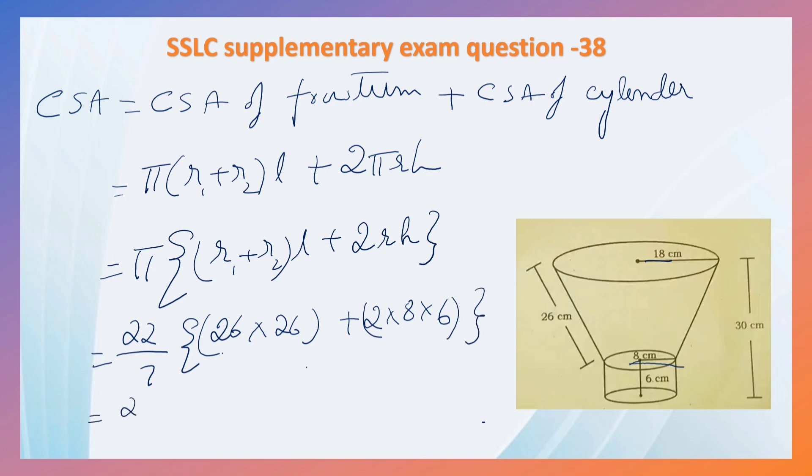22 by 7, 26 square is 676 plus 2 into 8 into 6 is 96, that is equal to 772. That is equal to 2426.28 centimeter square.